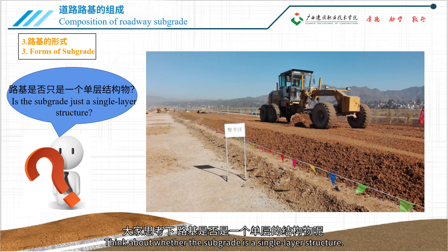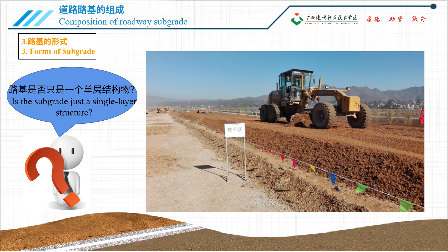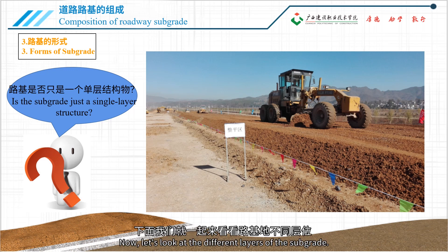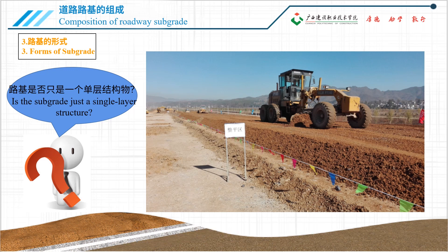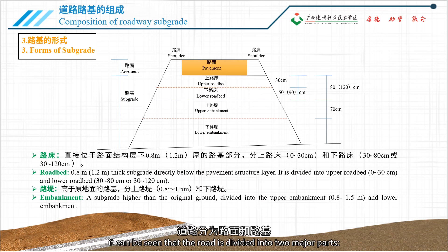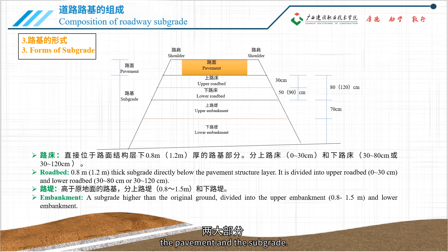Think about whether the subgrade is a single-layer structure. Clearly, it is constructed in layers. Now let's look at the different layers of the subgrade. From the cross-sectional view of the road, it can be seen that the road is divided into two major parts: the pavement and the subgrade.